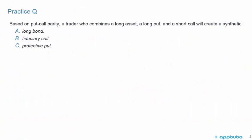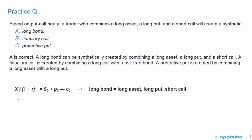Practice question 1: based on put-call parity, a trader who combines a long asset, a long put, and a short call will create a synthetic — A) long bond, B) fiduciary call, or C) protective put. Write out the formula and rearrange it. For a long bond: long on the underlying asset, long on the put, short on the call. Looking it up — long asset, long put, short call — that's a synthetic long bond.